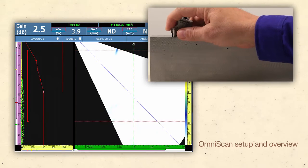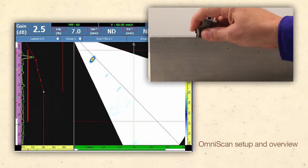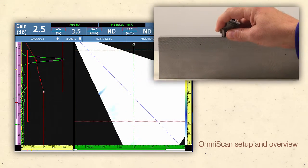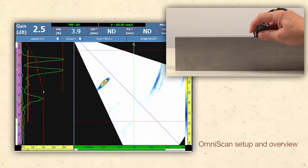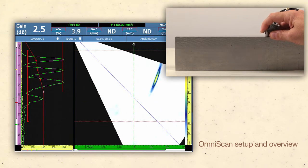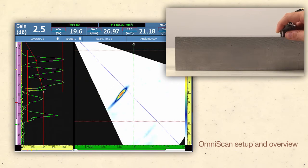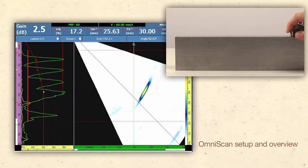UT optimization and calibration functions are performed using austenitic reference standards or pipe samples. The attenuation of the material and size of the weld bevel will determine the number of line scans or focus strategies required to meet the needs of the inspection.